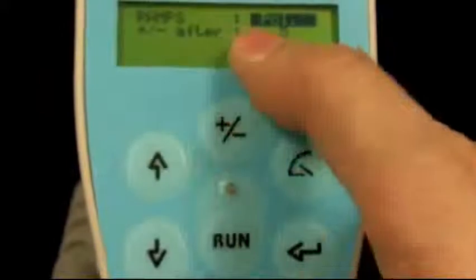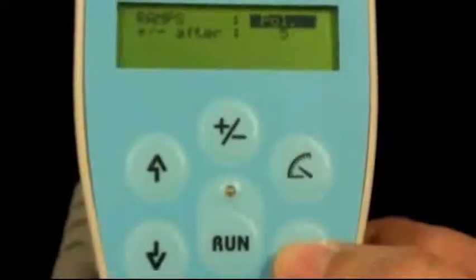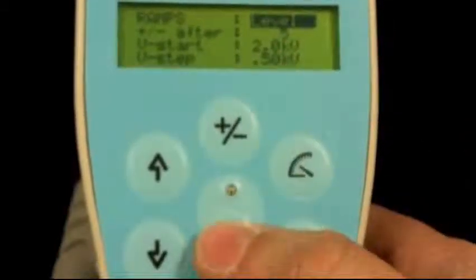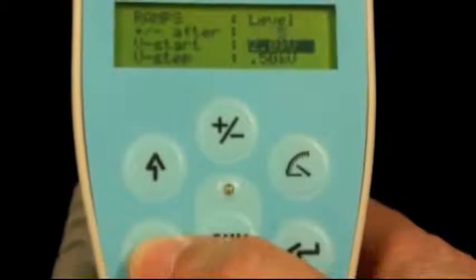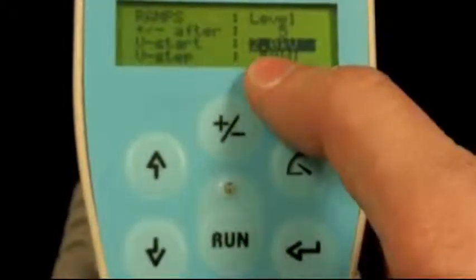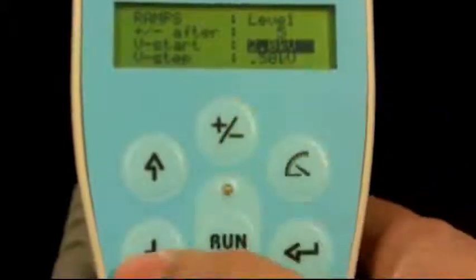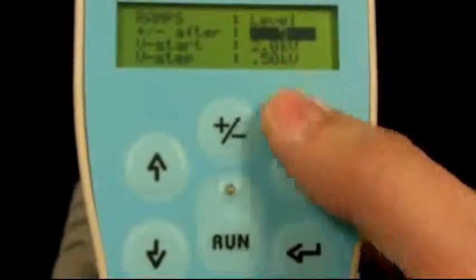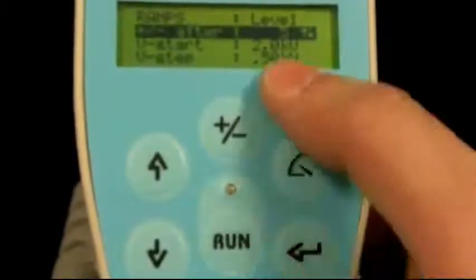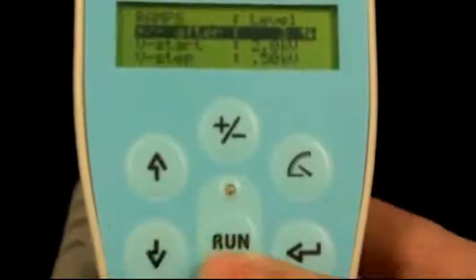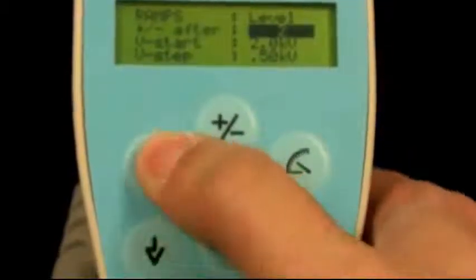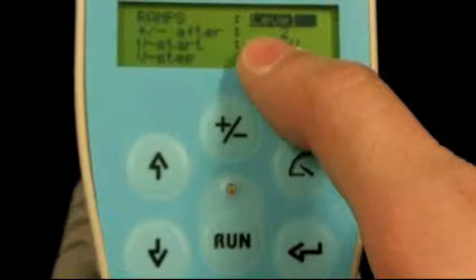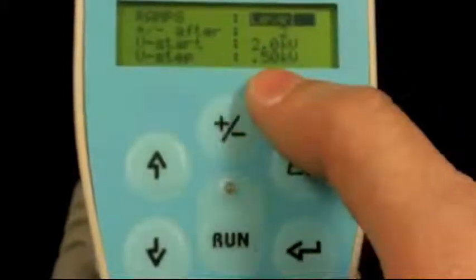The other ramp function available, instead of polarity, if you go back, hit enter again, you have levels. Scroll down and you can select, you can start at a certain level and after every pulse you can increase to a certain level. Hit enter, you can scroll down the number of pulses. So in this example, you would start at 2 kV and after every 2 pulses you would increase to 0.5.